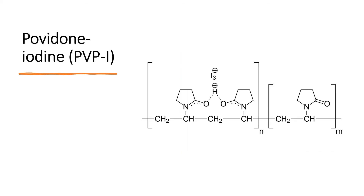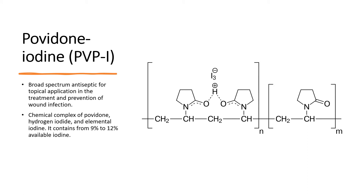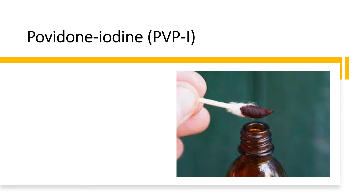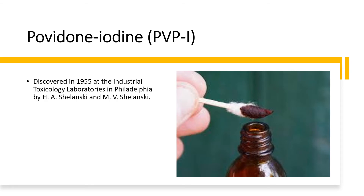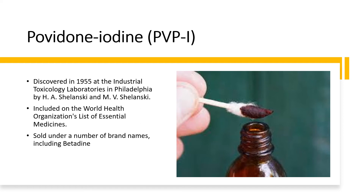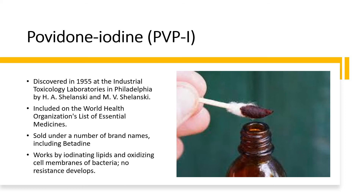The next antiseptic is povidone iodine, a broad-spectrum antiseptic used for topical application to prevent infection. It is a chemical complex of povidone, hydrogen iodide, and elemental iodide, and it works by releasing iodine which kills bacteria. Povidone iodine was discovered in 1955 in Philadelphia and is included on the World Health Organization's list of essential medicines. Its mechanism involves iodination of lipids and oxidation of bacterial cell membranes.